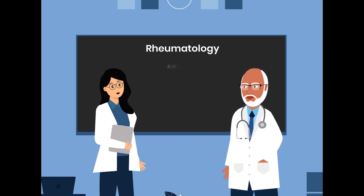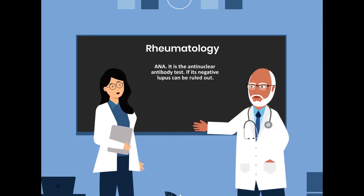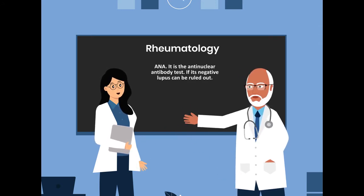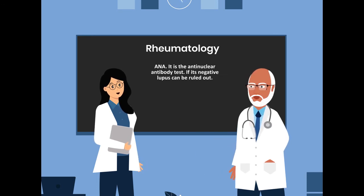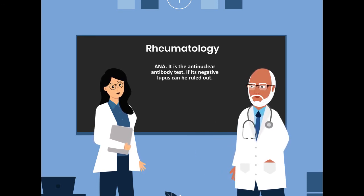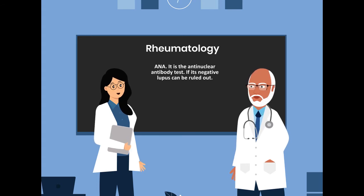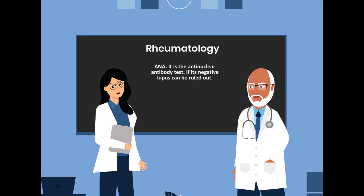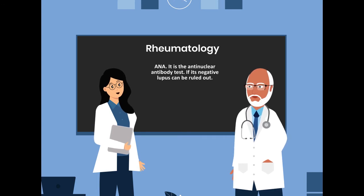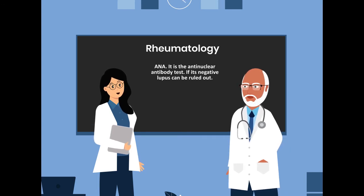What is the most sensitive test for lupus? One of the most sensitive tests for lupus is the ANA, also known as the anti-nuclear antibody test. If it is negative, lupus can be ruled out.